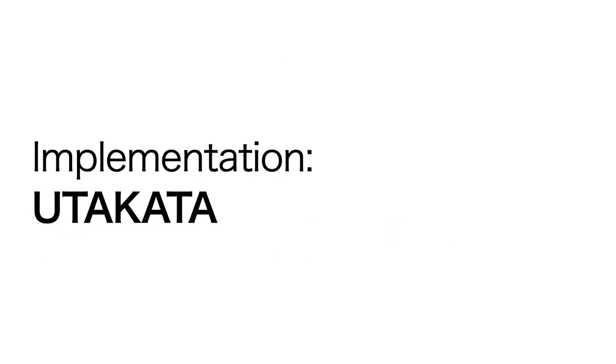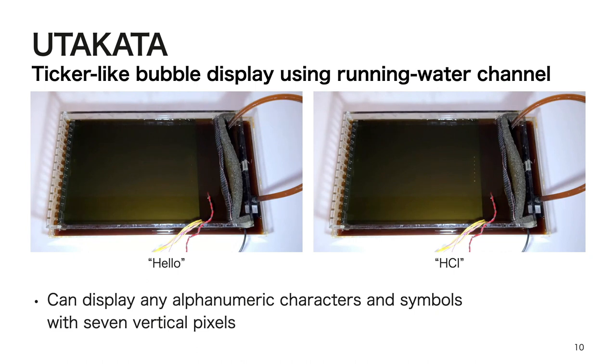I will now explain the implementation of the two devices. First is Utakata. Utakata is a ticker-like bubble display using a running water channel. As shown in these videos, Utakata can display any alphanumeric characters and symbols with 7 vertical pixels.